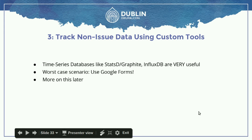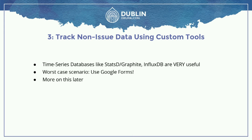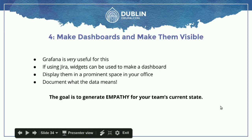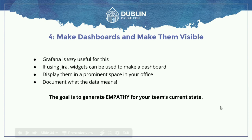Step three. So you've got your ticketing system, you're tracking your time. The third thing you can do is track non-issue data using custom tools. There are time series databases like statsd/Graphite and also InfluxDB for those into that — they're really useful. You can write code or basic utilities and tools to emit metrics into these systems for graphing. And in the worst-case scenario, you can use Google Forms. Now you've got all your data — your ticket data and your non-issue-tracker-related data — and you can make a dashboard out of them.